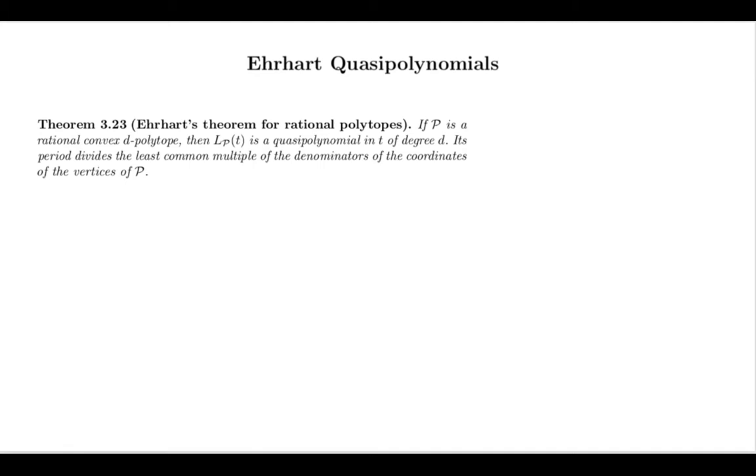Then the Ehrhart counting function, L sub p of t, is a quasi-polynomial of degree d, and the period of this quasi-polynomial divides the least common multiple of the denominators of the coordinates of the vertices. This is what we call the denominator of P.